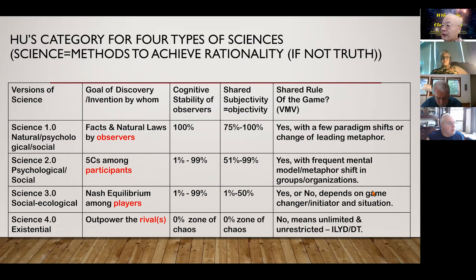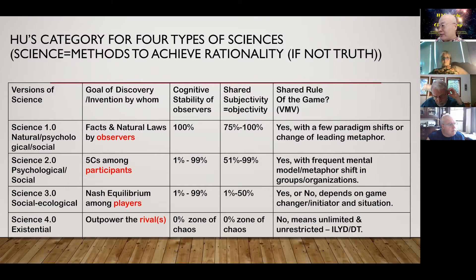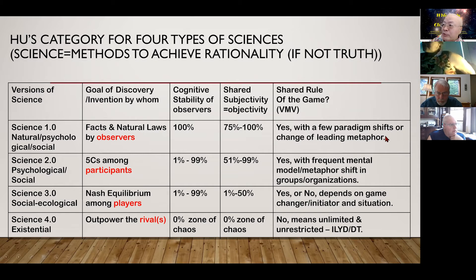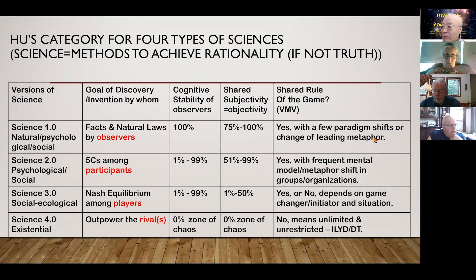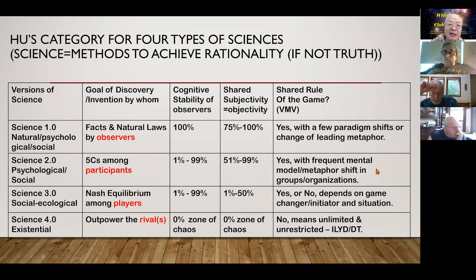By frequent, I mean — in a business school, in the management science department, we had a joke: 'What is the management science model of this month?' Because every month there is a new model coming in, a new theory capturing the public's attention in bestseller books. Compare this to Science 1.0, where Thomas Kuhn talked about paradigm shifts — Einstein came to break Newton's paradigm after many years of Newton's domination.